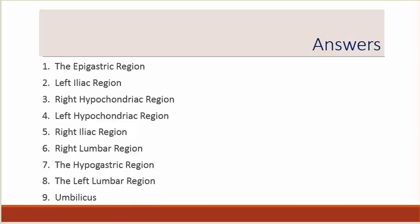Number one: the epigastric region. Number two: the left iliac region. Number three: right hypochondriac region. Number four: left hypochondriac region. Number five: right iliac region. Number six: right lumbar region. Number seven: the hypogastric region. Number eight: the left lumbar region. Number nine: umbilicus.